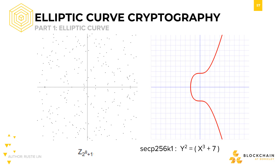To illustrate, on the left side is the same curve but over a small field where we only have integer values from negative 128 to 128. When we take it over a finite field, it doesn't look like a smooth curve anymore. However, there are unique properties of elliptic curves that will help us in creating a one-way function to generate public keys from private keys.